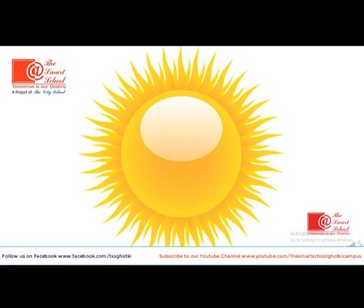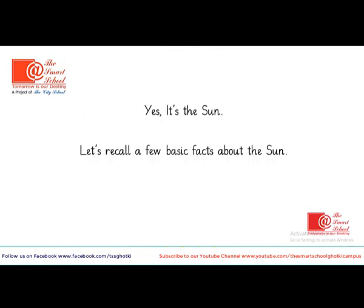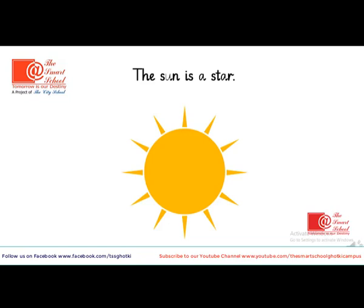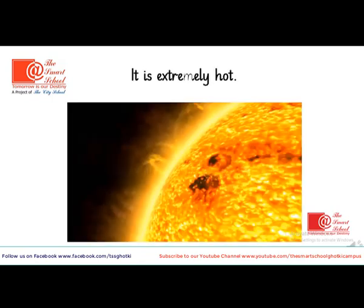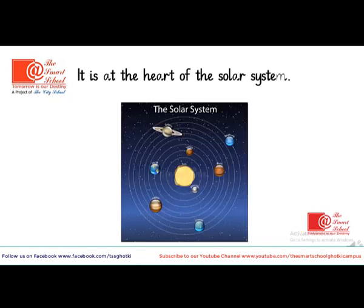What can you see on your screen now? It's the Sun. Let's recall a few basic facts about the Sun. The Sun is a star — it's the biggest star, and it is extremely hot. It is at the heart of the solar system. You can see in this image, the Sun is in the center of the solar system, and all the rest of the planets are moving around it. Do you know how the planets move on their orbits without getting disbalanced? It's the gravity of the Sun, which keeps all the elements of the solar system in their place.